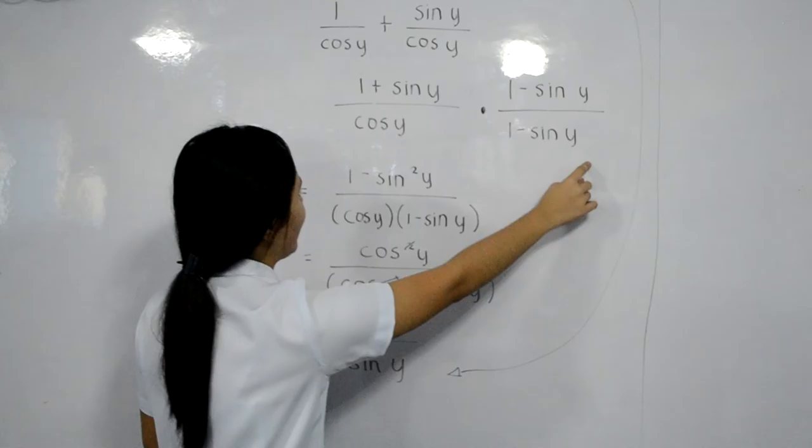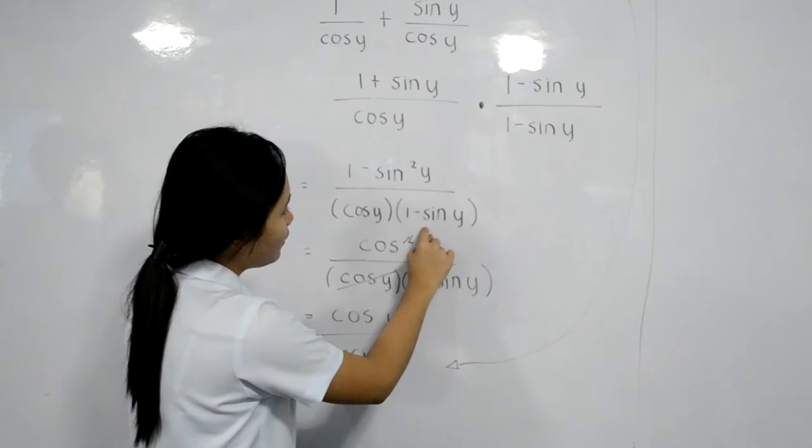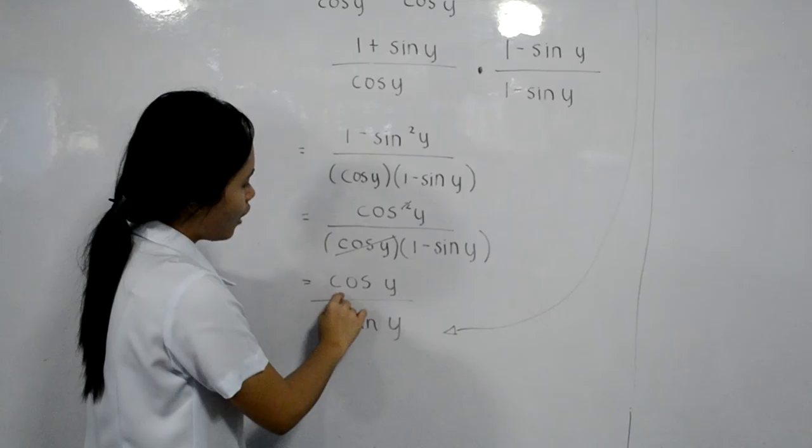The equivalent of 1 minus sine squared y in the Pythagorean identity is cosine squared y, then we can rewrite cosine y times 1 minus sine y. Cosine squared y divided by cosine y equals cosine y.